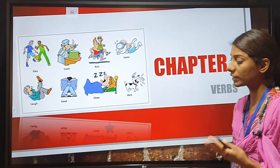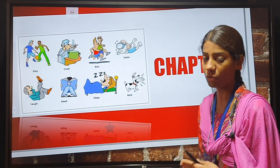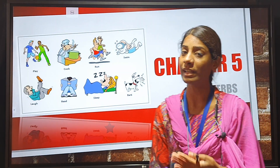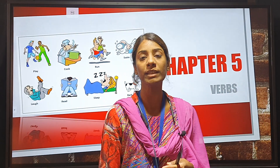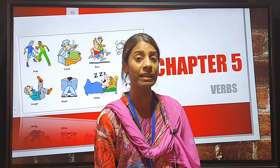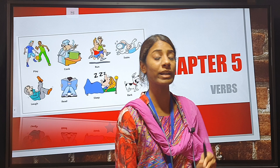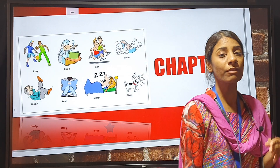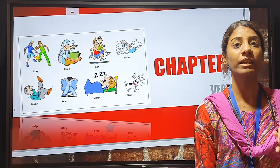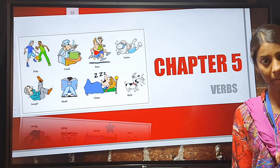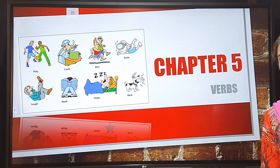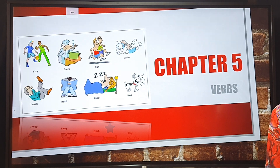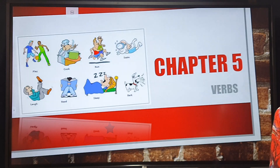We have studied about verbs in our earlier chapter on the subject and the predicate, and I told you that the predicate of a sentence will always contain a verb. The predicate of a sentence is always a verb.